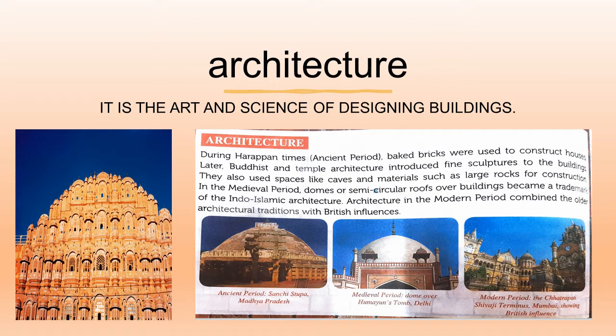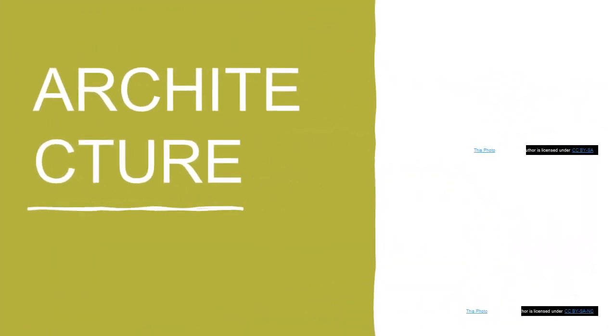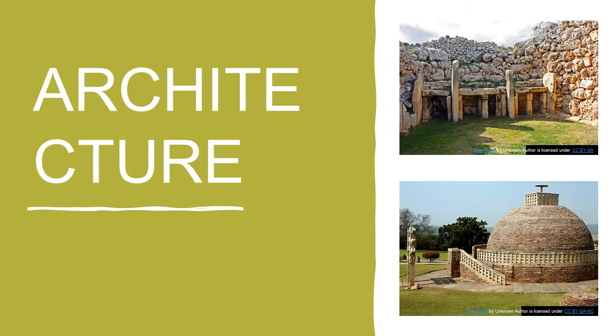In the modern period, when the Britishers were in India, the form of architecture changed and we can see the British influence in so many buildings. For example, Chhatrapati Shivaji Terminus in Mumbai shows the British influence in architecture. These are some examples of architecture.